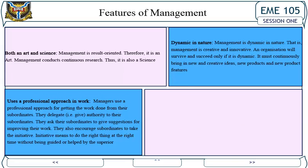Management is both an art and a science. It is result-oriented, hence it is an art; it also conducts continuous research, hence it is also a science. Managers use a professional approach for getting work done — they delegate authority to subordinates, ask subordinates for suggestions, and encourage them to take initiative. Initiative means doing the right thing at the right time without being guided or helped by a superior.